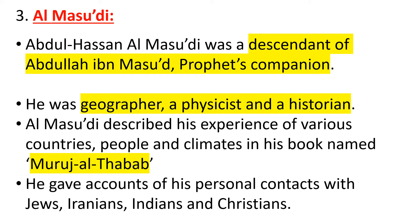Al-Masaudi describes his experience of various countries, peoples, and climates in his book named Muruj al-Dhahab. In this famous book, he talks about different countries, peoples, and different climates where different peoples are living. He put all his experience into his book Muruj al-Dhahab.